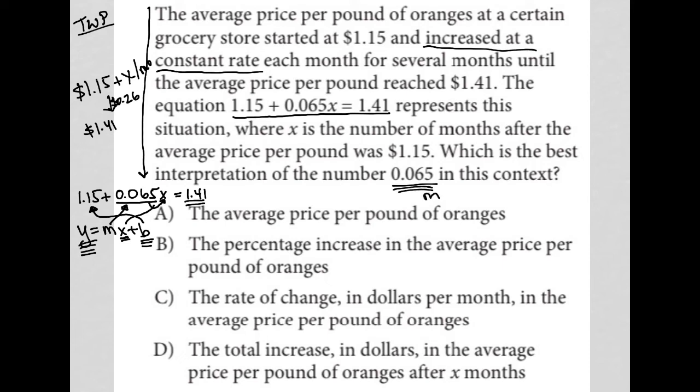So answer choice A says the average price per pound of oranges. That's definitely not what the slope means here. B, the percentage increase in average price per pound of oranges. This is not a percent. This is actual dollars. C, the rate of change in dollars per month in the average price per pound of oranges. That's our answer. Rate of change is another way to describe slope. So also keep that in mind for this test. You see rate of change, it is slope.